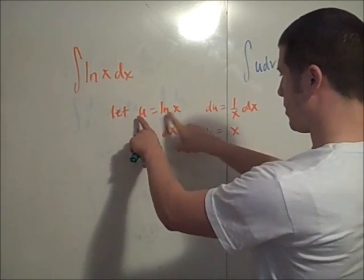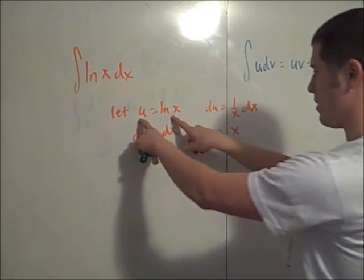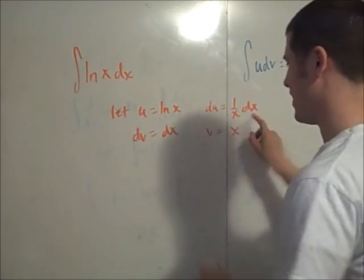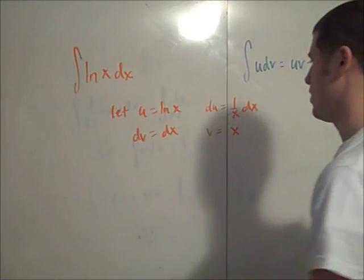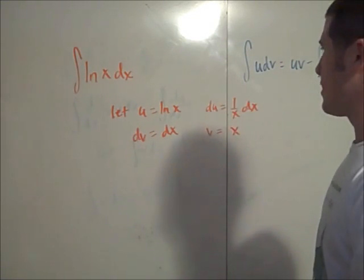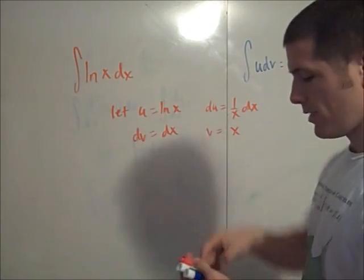So, I took the derivative, du/dx is 1 over x. So, du is 1 over x dx here. This gives us, now we're going to use this with this guy.